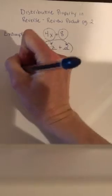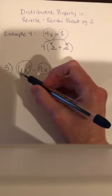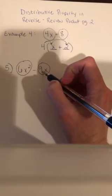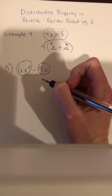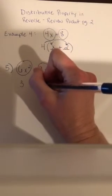Okay, let's do another example — example 5: 6x squared minus 9x. Again, let's look at the terms. What do these two terms have in common? Let's look at the numbers first. Is there a number that divides equally into both 6 and 9? There is — it's 3.